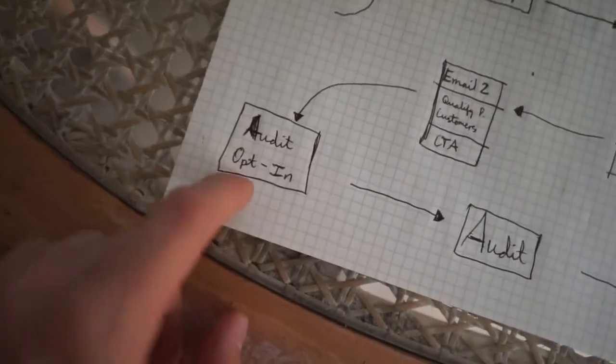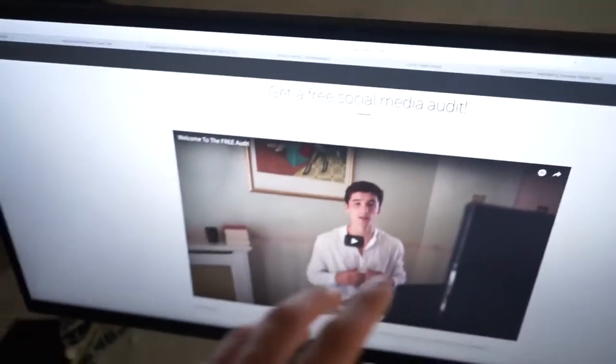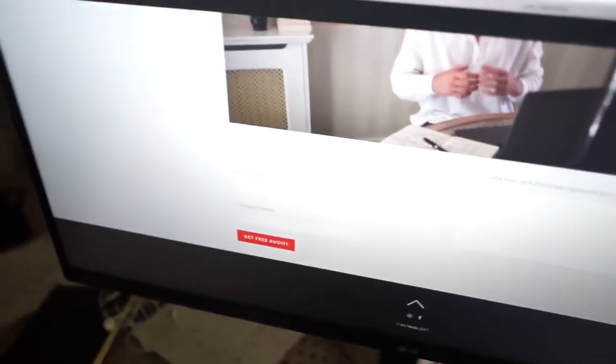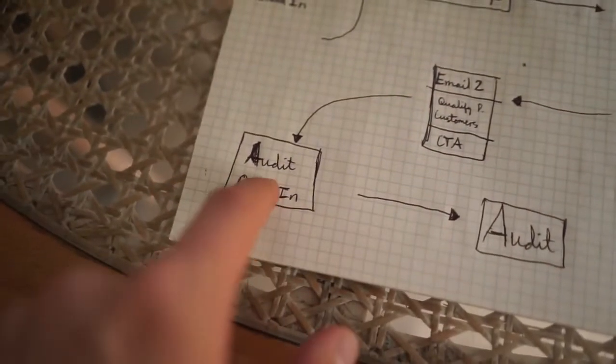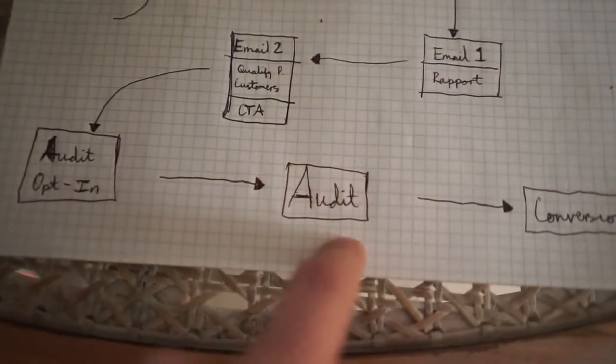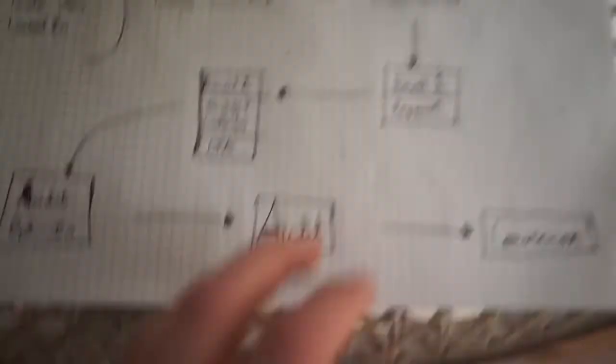Right after that I have my call to action, which is to go to my free audit. I actually charge companies £300 for this, but because I'm taking them through this funnel I offer it for free. The audit opt-in is a simple landing page on my company website with a short video and a couple of forms. Once they've opted in, I've received information about their business and it's time to audit them.